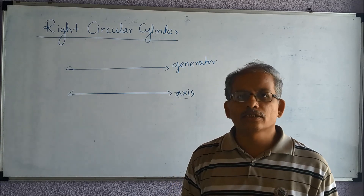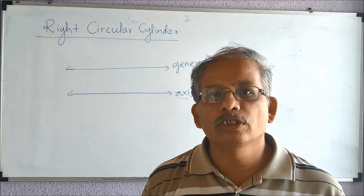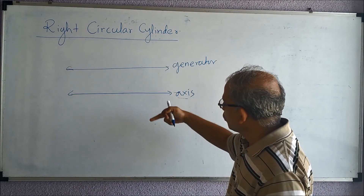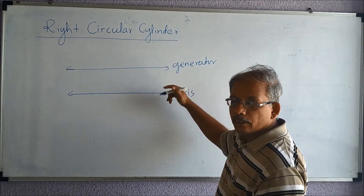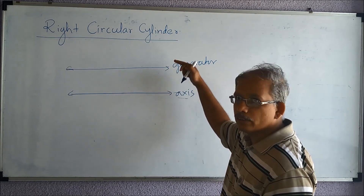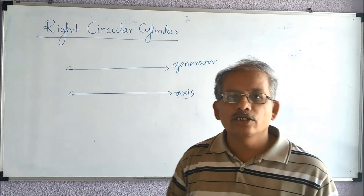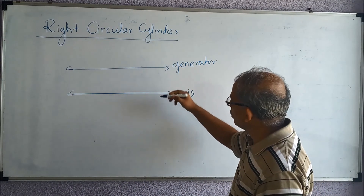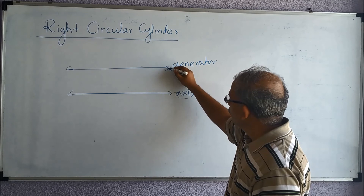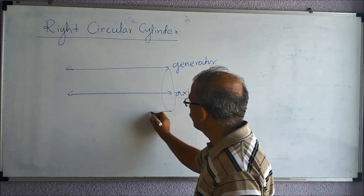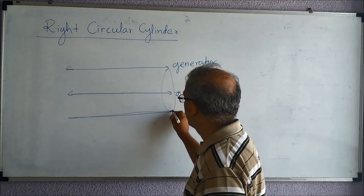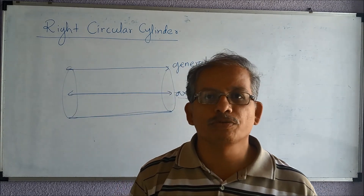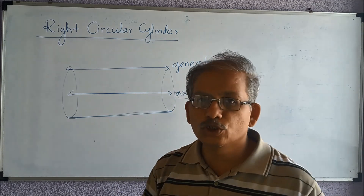There are two lines parallel to each other — one called the axis and one called the generator. The axis is fixed, and the generator line revolves around this axis. When we revolve it, we generate a cylinder. This is the picture we get after revolving the generator line around the axis.